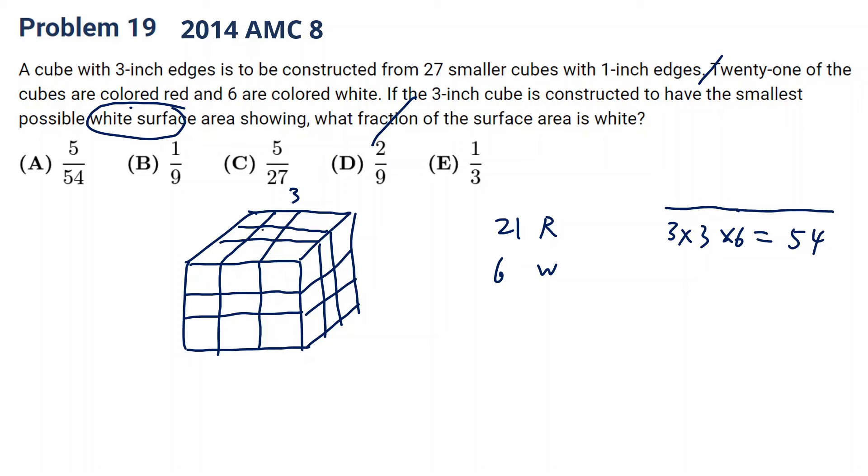So it seems if we put the white one like this, there will be only one face shown. The other part, for example, if we put here, there will be three faces shown. That's not good. And don't forget there's an inner core here. The inner core, if we put the one in the inner core, no faces will be shown.